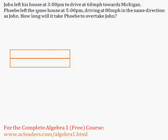John left his house at 3 p.m. to drive at 60 miles an hour towards Michigan. Phoebe left the same house at 5 p.m., so two hours later, driving at 80 miles an hour in the same direction. How long will it take her to overtake John?